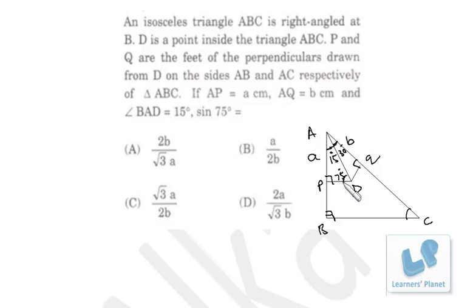Now since we have to find out the value of sine 75°, look at this triangle ABD. From here, sine 75° will be perpendicular by hypotenuse. So perpendicular is AP, that is A, and hypotenuse is AD. Now AD is unknown length, so we have to find out AD in terms of B from that triangle.